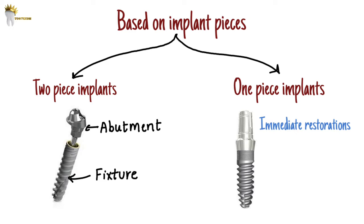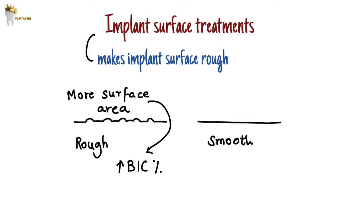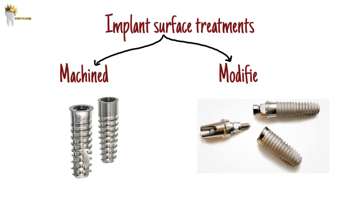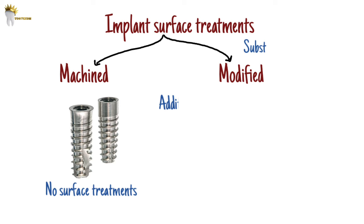Implant surface treatments are done to make the implant surface rough, because roughened surfaces increase the bone-to-implant contact percentage during the initial healing phase. The rough surface helps the migration of osteogenic (bone-forming) cells to the implant surface for contact osteogenesis. Implant surfaces are either machined or modified. Machined surfaces are not modified with different surface treatments and were most commonly used in the past, but not anymore because modified surfaces have greater surface area. Modified surfaces use either additive methods or subtractive methods — additive means something is added to make the surface rough, and subtractive means something is removed, like etching the surface.